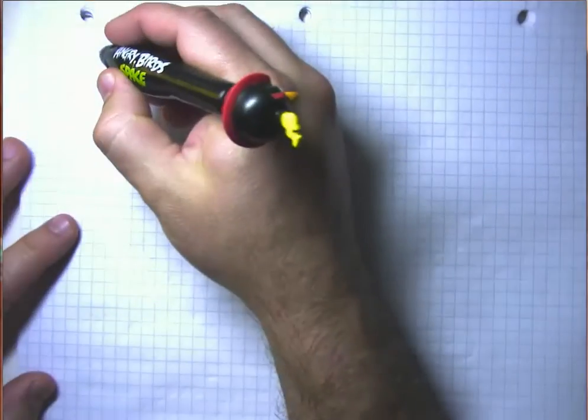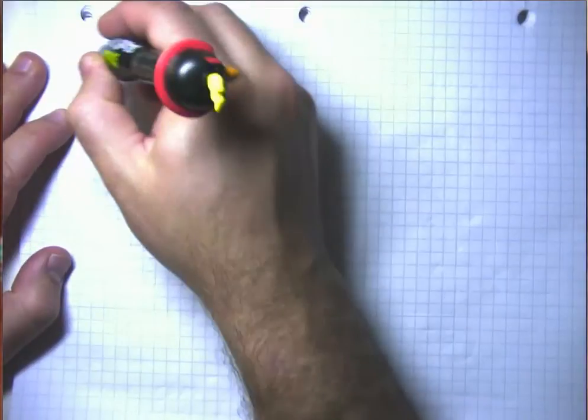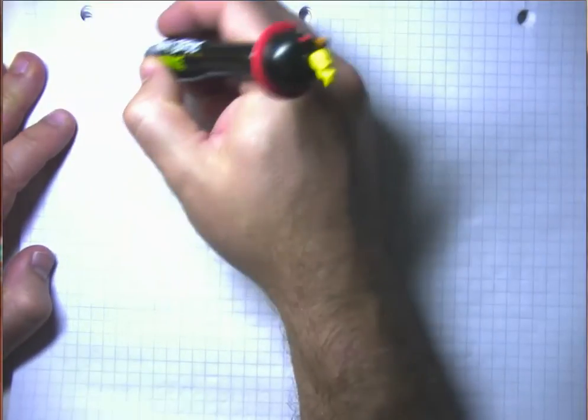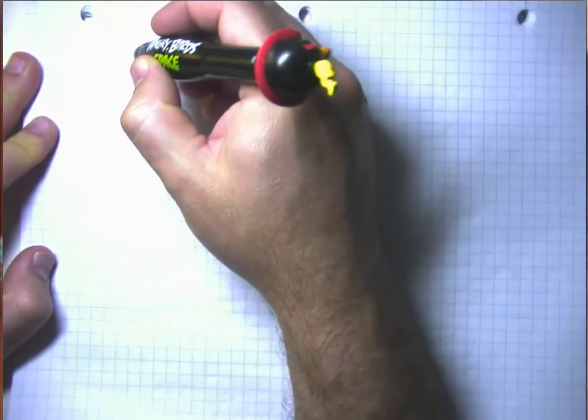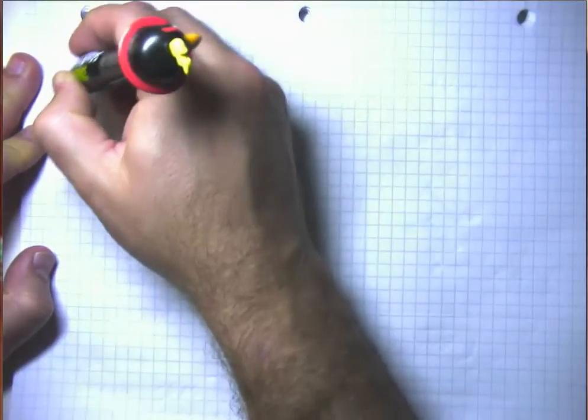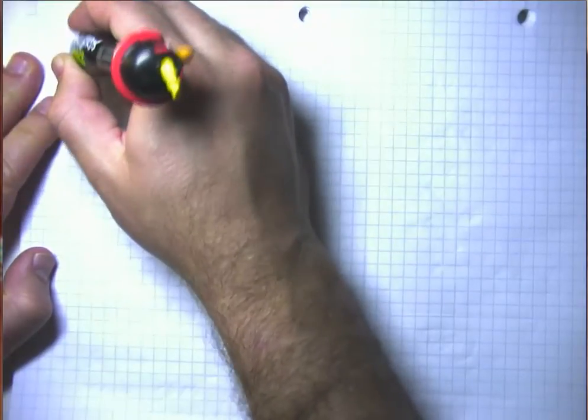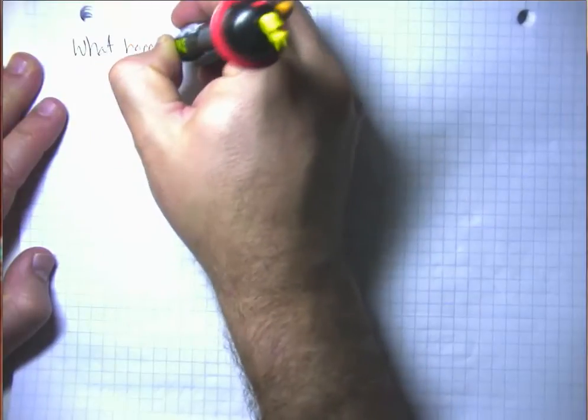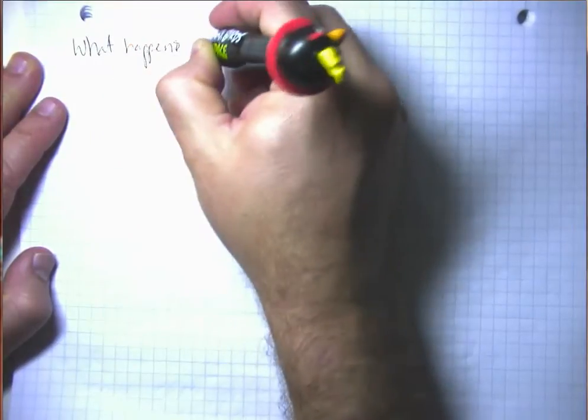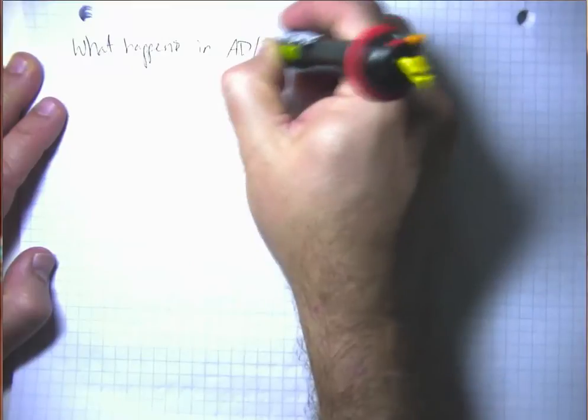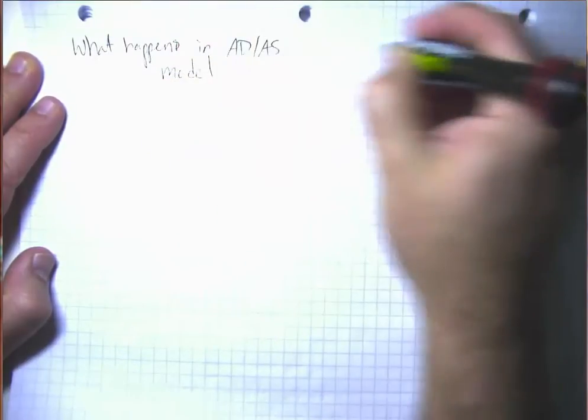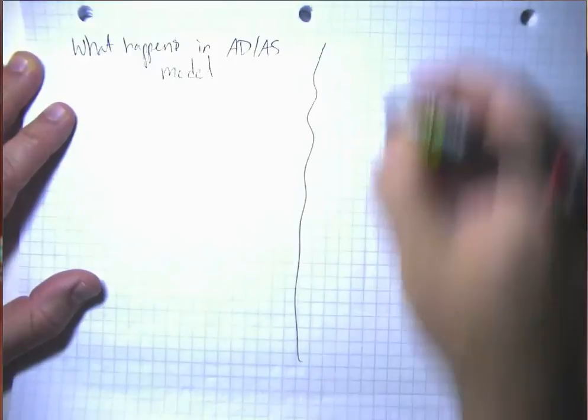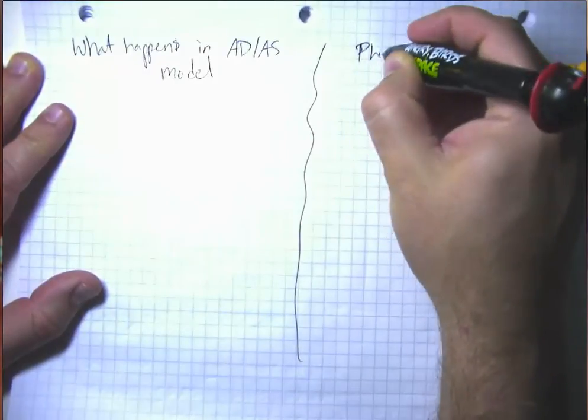So let me go ahead now and sort of come back and review some of the things we've covered already. So this is sort of a summary or a cheat sheet or call it what you will. So thinking about what happens in the aggregate demand, aggregate supply model, and then how that translates over into the Phillips curve model.